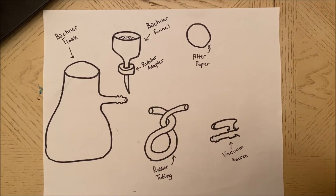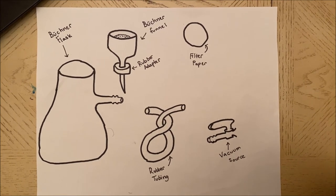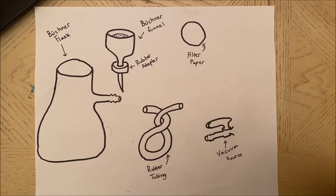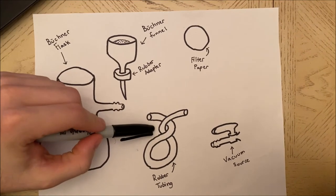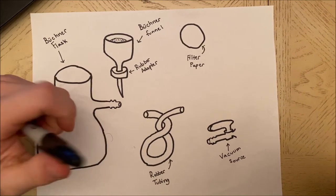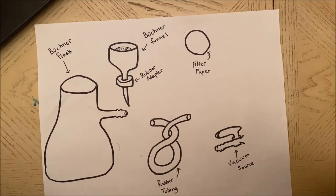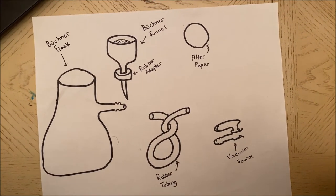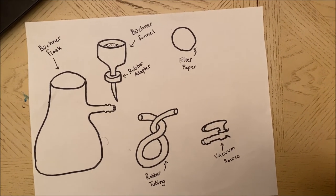A couple precautionary things to note: make sure that our tubing is thick-wall tubing, not tygon tubing. The thick-wall tubing needs to be used because the thinner tubing will sometimes collapse under the reduced pressure and that can cause problems.